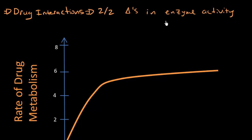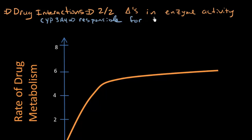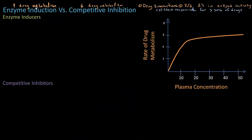Why are changes in enzyme activity so important? Let's not forget that one enzyme — CYP3A4, as we remember from the last lecture — is responsible for the metabolism of more than 50% of drugs. So if I increase drug metabolism or decrease the number of available free enzymes, that has the potential to affect the metabolism of 50% of available drugs.